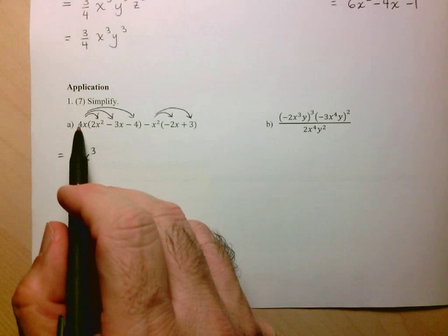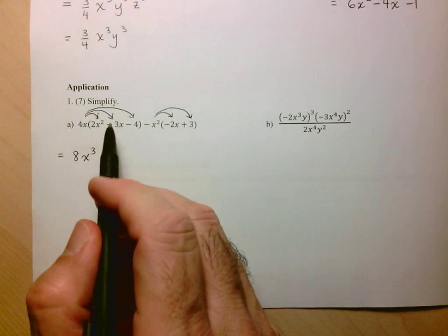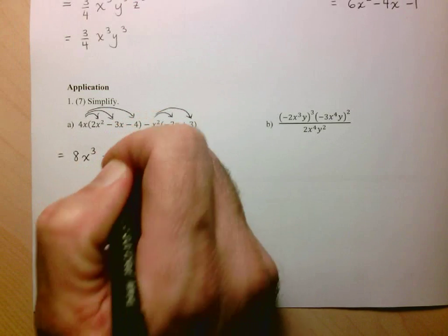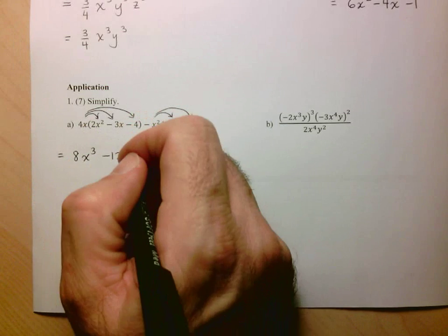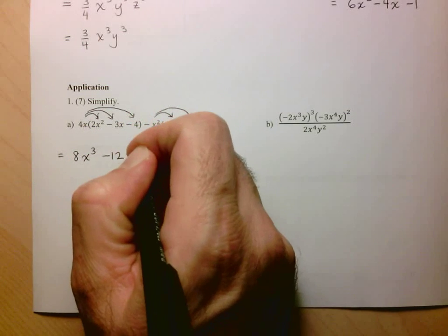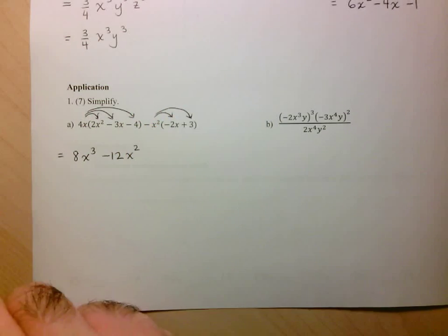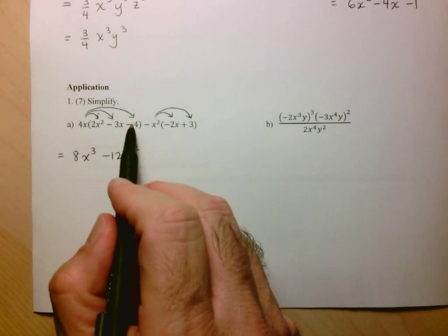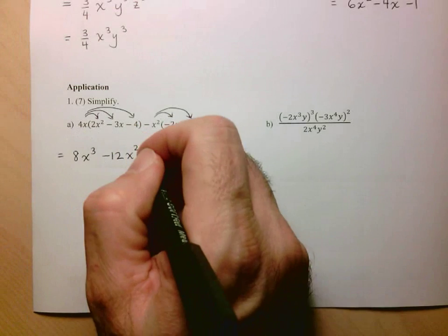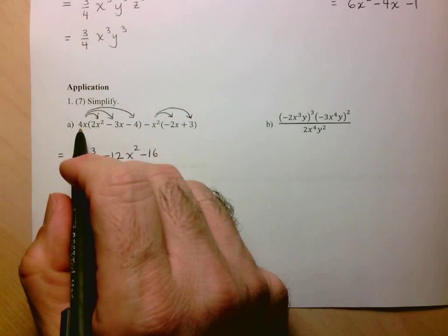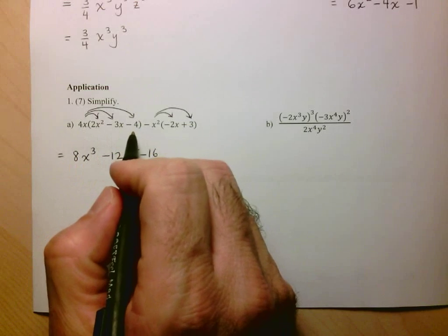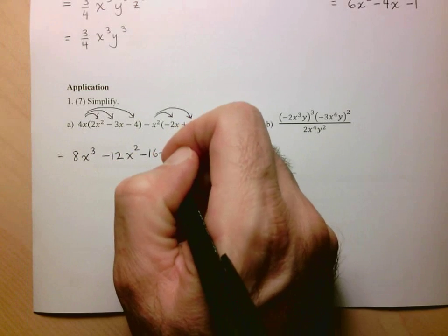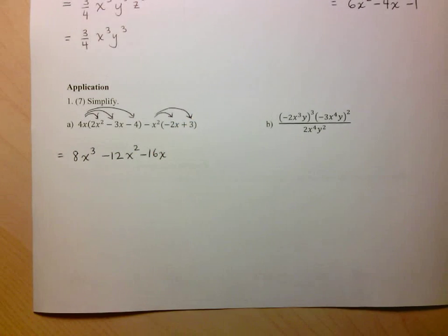Next, the second term: 4 times negative 3 is negative 12. x times x, so x to the 1 times x to the 1 is x squared. And then 4 times negative 4 is negative 16. The x is not multiplying anything, so it remains — so that term is negative 16x.